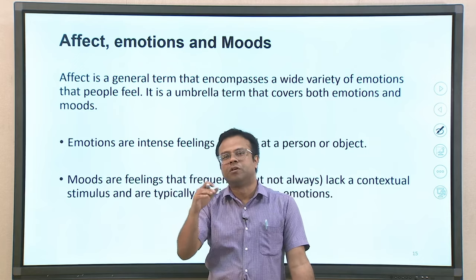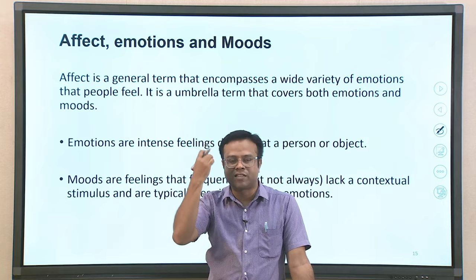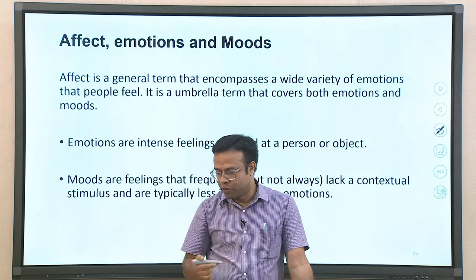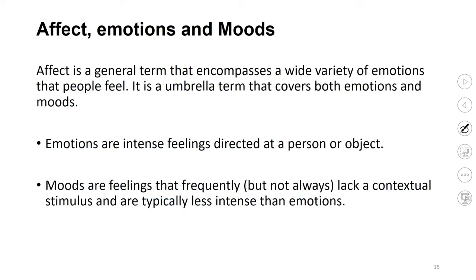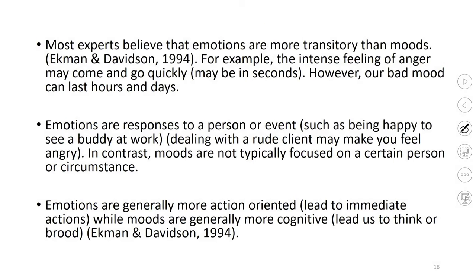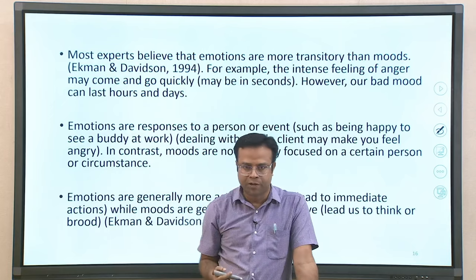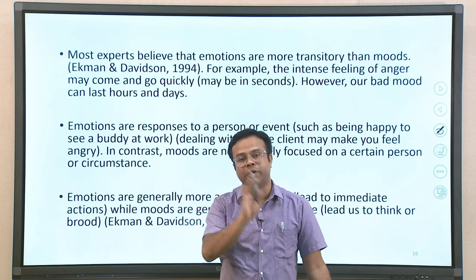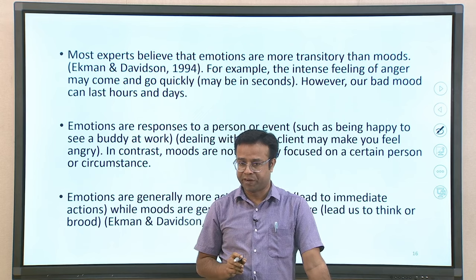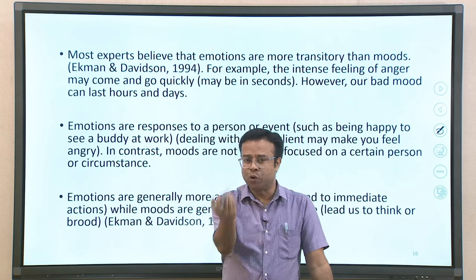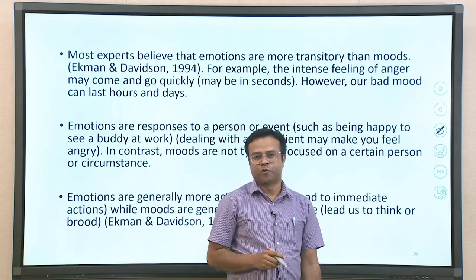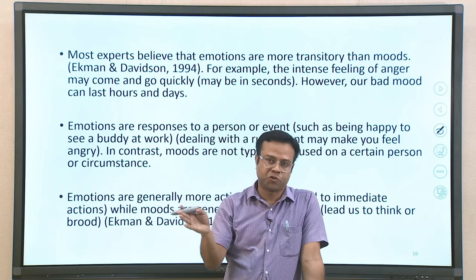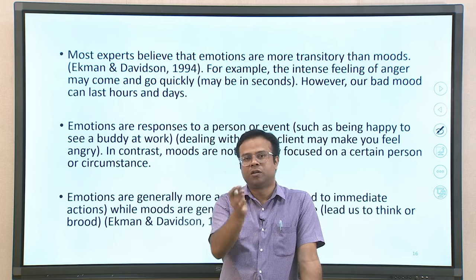Most experts believe that emotions are more transitory in nature — they generally come and go very quickly. A situation stimulates a certain emotion, and when the situation is gone, the emotion also generally vanishes. Mood, however, can be much more long-lasting — you may feel a bad mood the whole day or even for days. In terms of duration, intense feelings of anger may come and go within a few minutes or seconds, whereas bad mood can last for hours and even days.